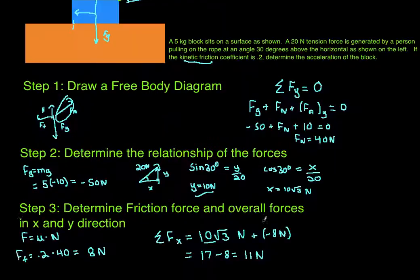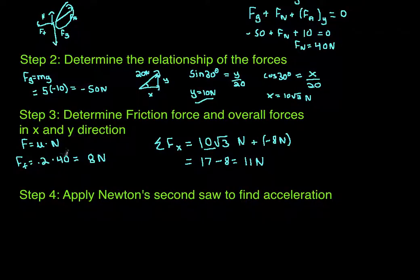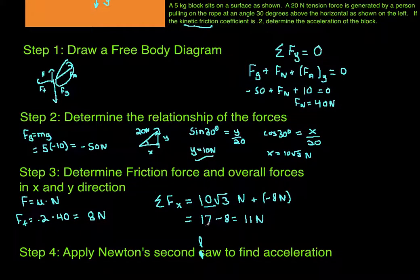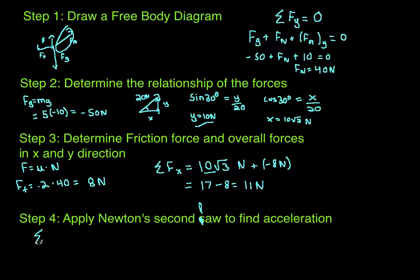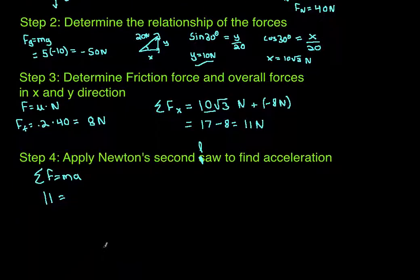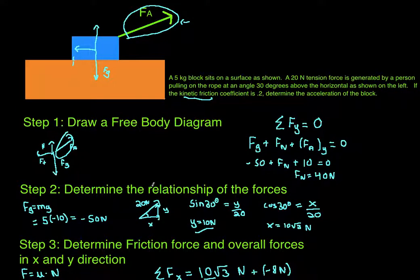The net force acting on the block is about 9 to 11 Newtons. Applying Newton's second law — the summation of forces equals ma — the summation of forces in the X direction equals 11 Newtons, which equals the mass of 5 kilograms times the acceleration. Therefore, acceleration equals 11 divided by 5, which equals 2.2 meters per second squared. That's how you find the acceleration of a block being pulled on a surface with friction.